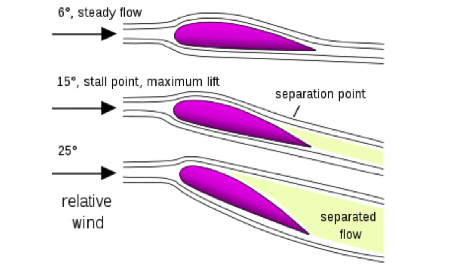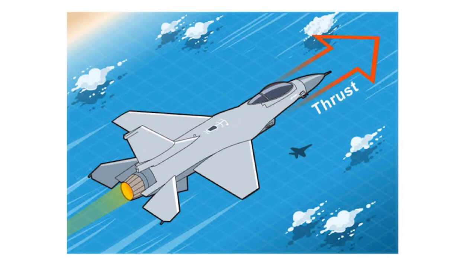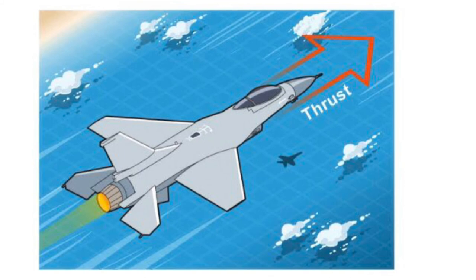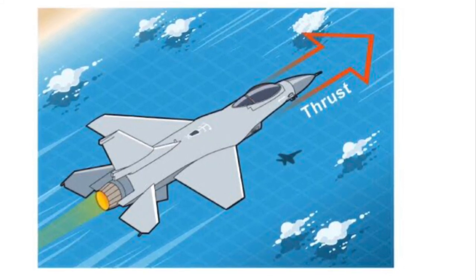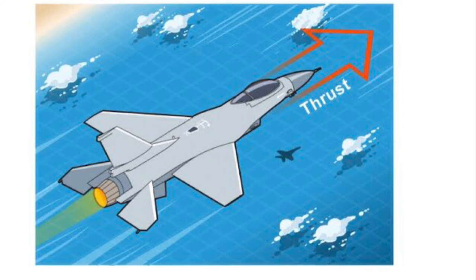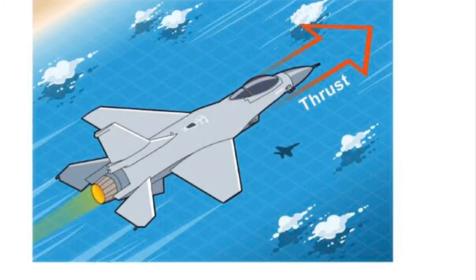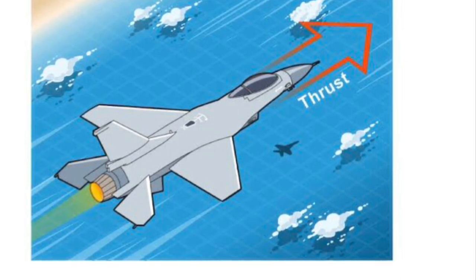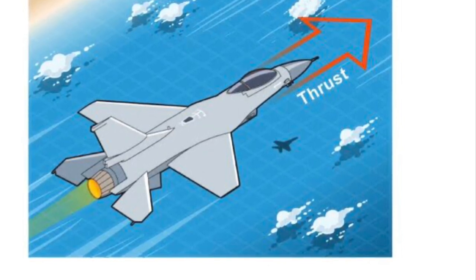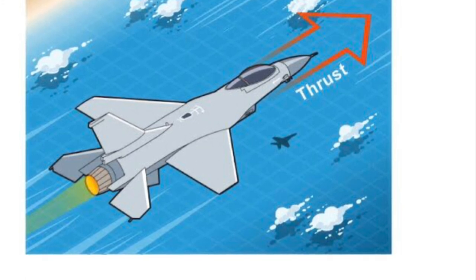Next let us look at thrust. Thrust is a reaction force described by Newton's second and third laws. When a system accelerates or expels mass in one direction, the accelerated mass causes a force of equal magnitude in the opposite direction on that system. Thrust is the force that pulls an aircraft forward through the air, overcoming drag. It is generated by engines through a propulsion system and is most often produced through the reaction of accelerating a mass of gas. Since thrust is a force, it is a vector quantity having both magnitude and direction.